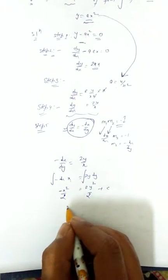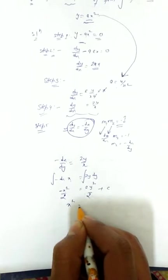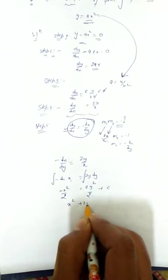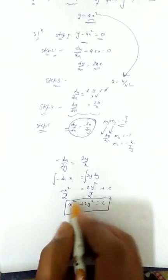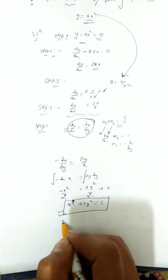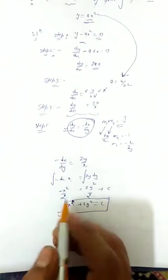Simplifying, this becomes x² + 2y² = c. This is the orthogonal trajectory of the family of parabolas y = ax².